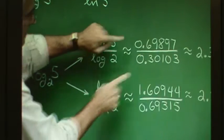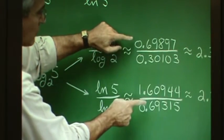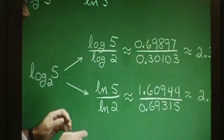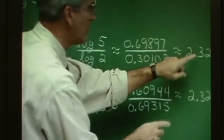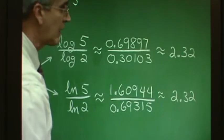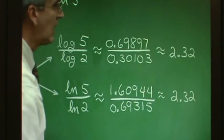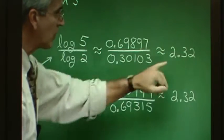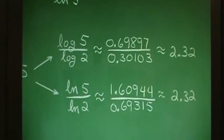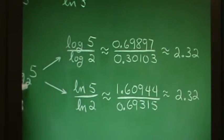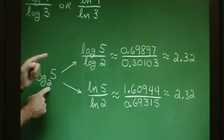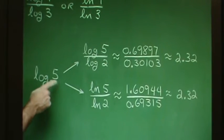These are the approximate values for numerators and denominators, yet the quotients both turn out to be 2.32, as we'd expect. The proper interpretation is that 2.32 is the exponent on 2 that gives 5 — that is, 2 to that power equals 5.